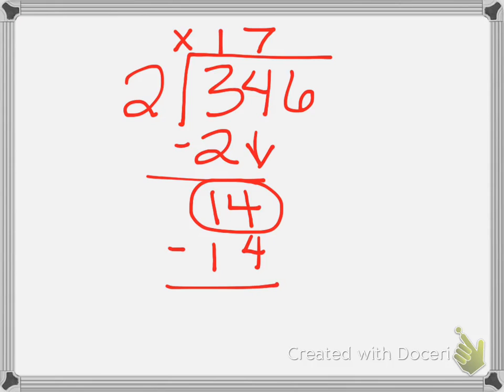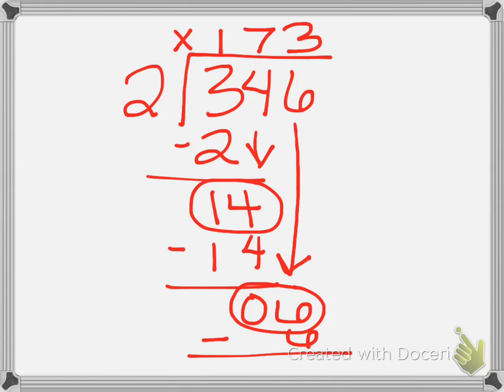I will subtract that, and that leaves me with no tens left, and so I have to drop my ones place down. And ask, how many times does 2 go into 6? And they should say 3 times. We multiply that, 3 times 2 gives me 6, and I subtract it, and again, we're left with no remainder.